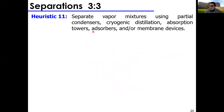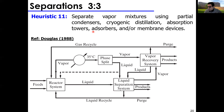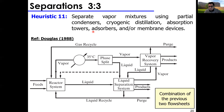Heuristic eleven: separate vapor mixtures using partial condensers, cryogenic distillation, absorption towers, absorbers, etc. You need to use the right technology for separating vapor mixtures and be aware of which separation technology applies to which phase. We'll have several lectures on separations, but keep in mind: there are technologies for vapor/gas systems and technologies for liquid systems — you would not use the same technology in both.